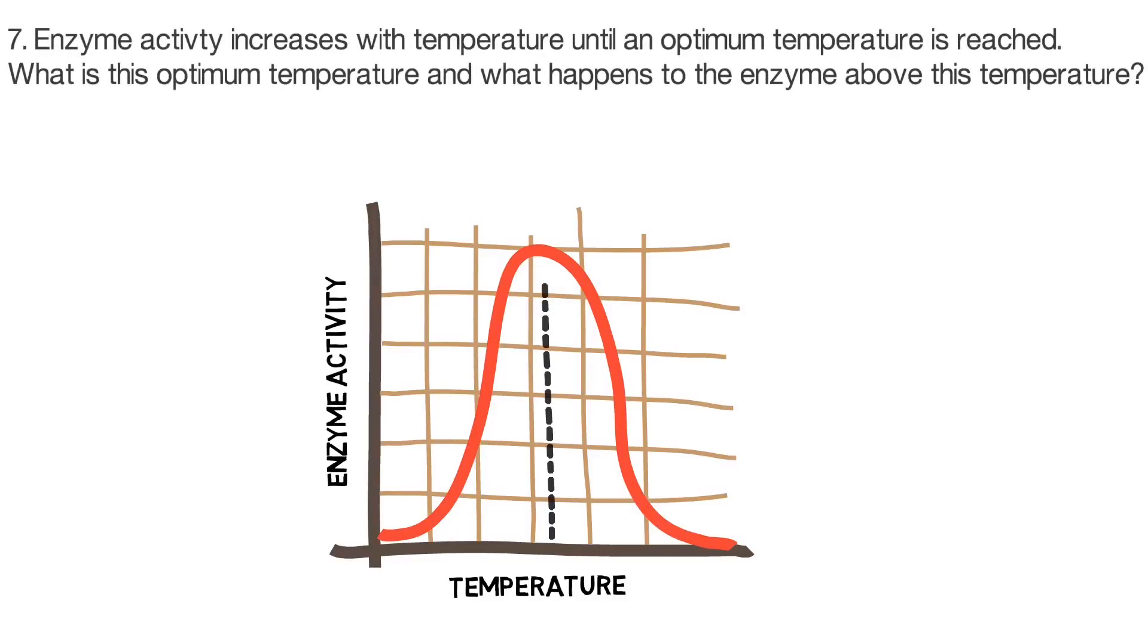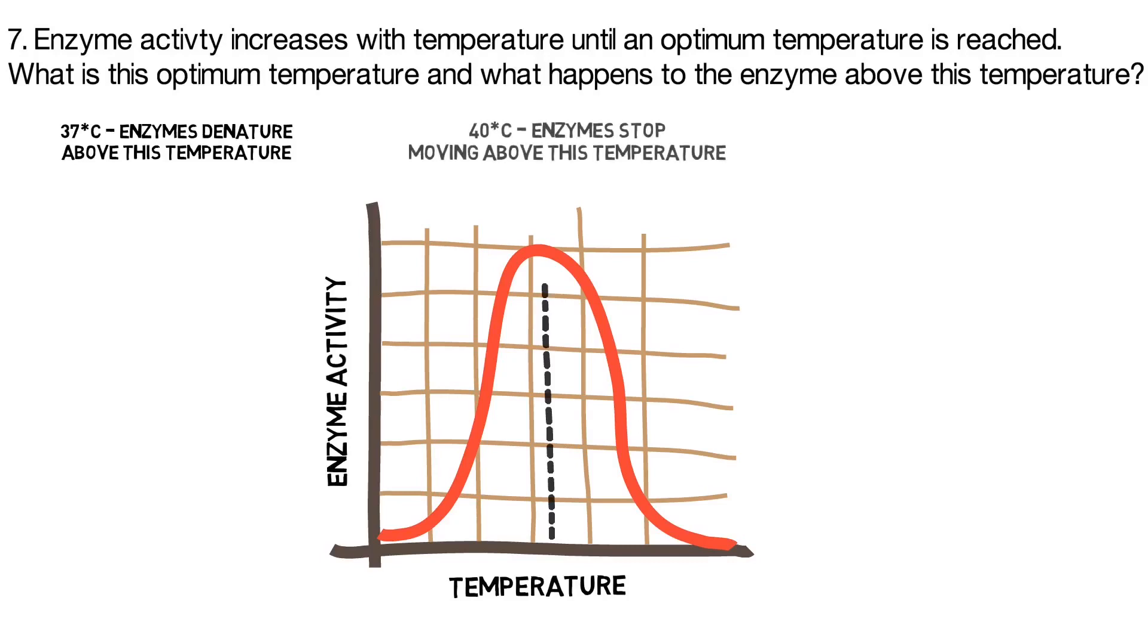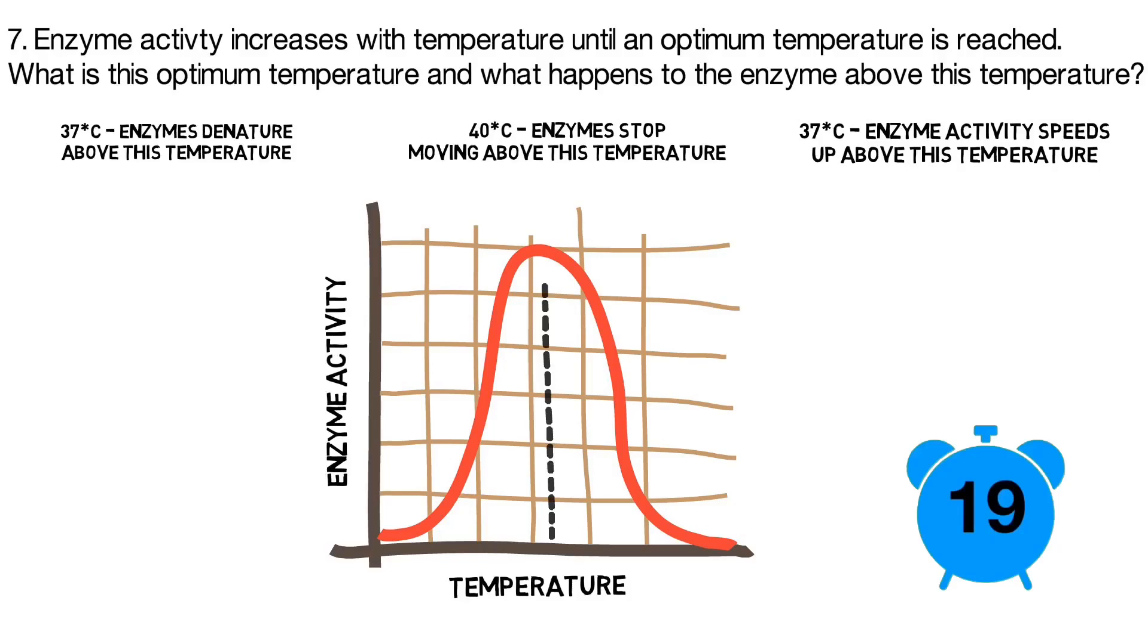Enzyme activity increases with temperature until an optimum temperature is reached. What is this optimum temperature? And what happens to the enzymes above this temperature? Is it 37 degrees and the enzymes denature above this temperature? Is it 40 degrees and enzymes stop moving above this temperature? Or is it 37 degrees and enzyme activity speeds up above this temperature?